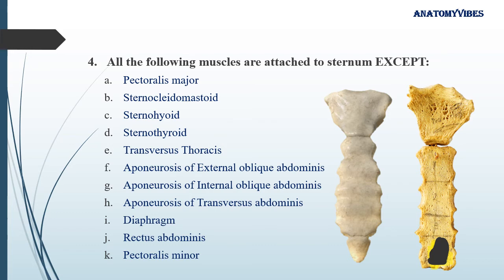The next question: all the following muscles are attached to the sternum, except. On the anterior surface of the sternum, the pectoralis major muscle is attached all the way up to the attachment of the 6th costal cartilage. So the first muscle on the anterior surface is pectoralis major.